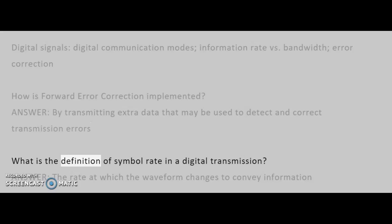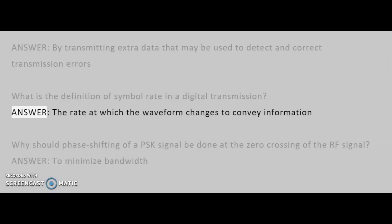What is the definition of symbol rate in a digital transmission? Answer: The rate at which the waveform changes to convey information.